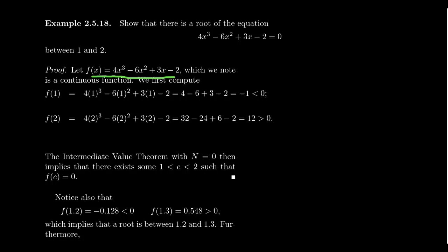4x³ - 6x² + 3x - 2. Notice that this function is a polynomial function. Therefore, it is continuous on its domain, which is all real numbers. So f(x) is continuous everywhere. So that's the first part. Whenever you do a proof like this, you always need to verify the assumptions of the Intermediate Value Theorem. Because if you take a function that's not continuous, then the result is not guaranteed.